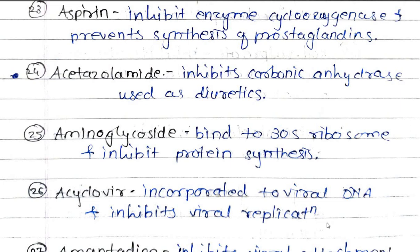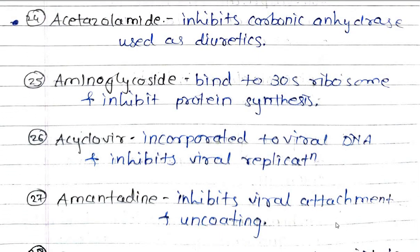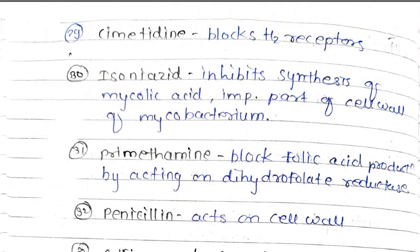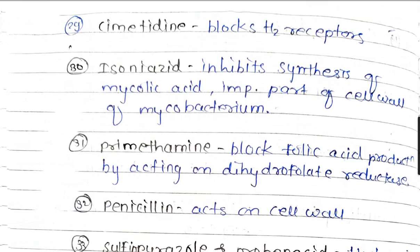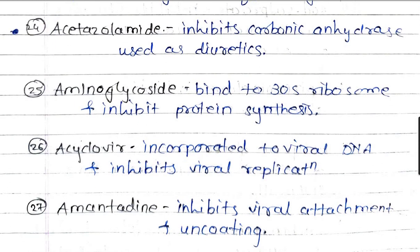Acyclovir is incorporated into viral DNA and inhibits viral replication. Amantadine inhibits viral attachment and uncoating. Benzodiazepines act on benzodiazepine receptors and facilitate the effect of GABA.